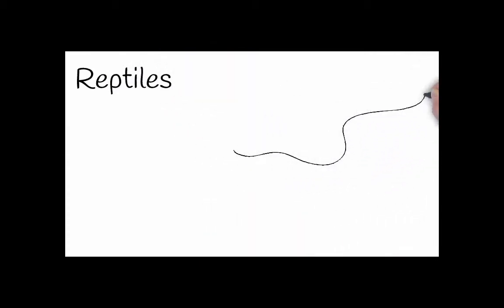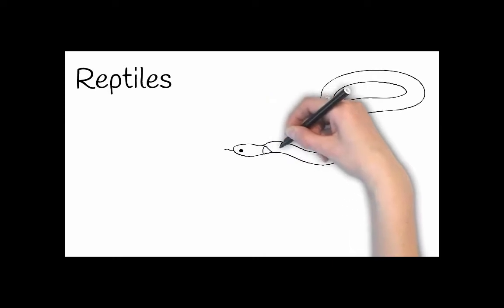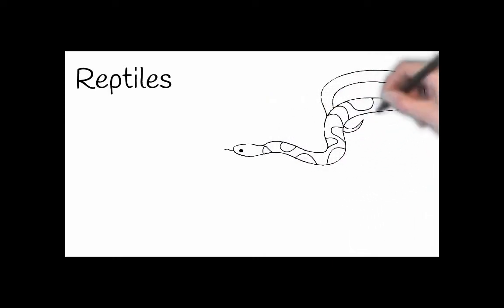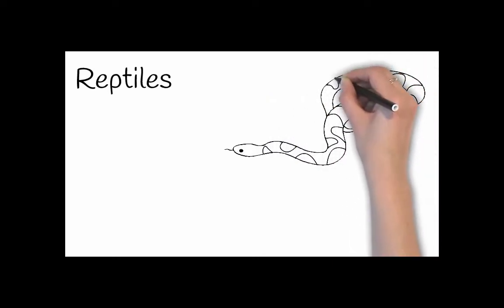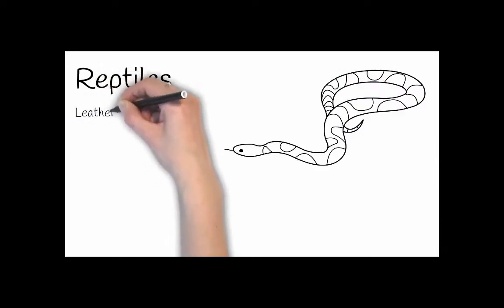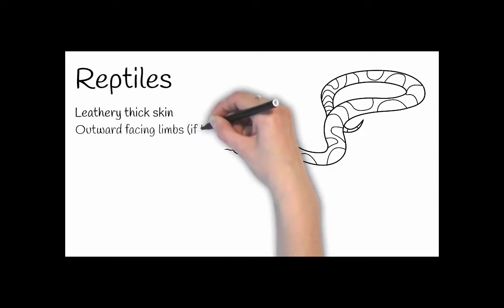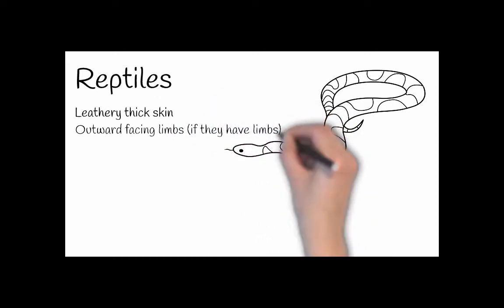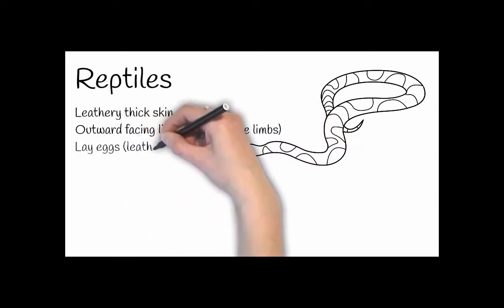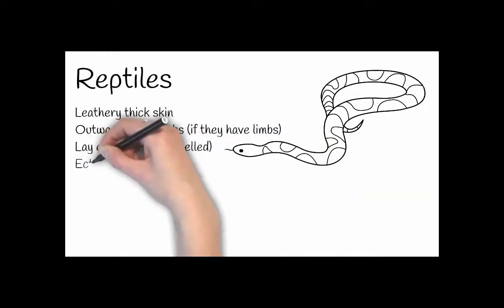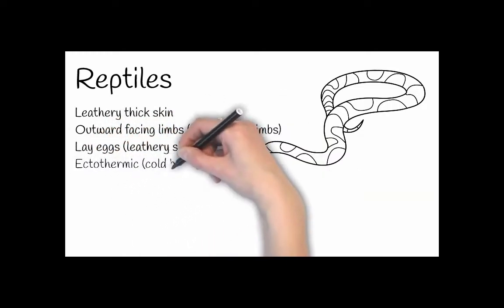Reptiles are classified or distinguished by their leathery thick skin. If they have limbs then they are outward facing, an example being a crocodile or a lizard. They also lay eggs but these have a leathery shell, and these are ectothermic, so reptiles are cold-blooded animals.